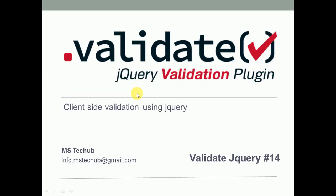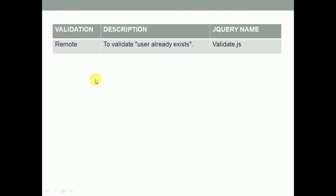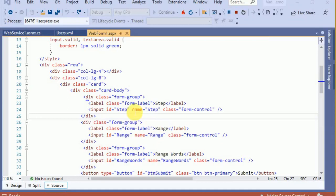Hello and welcome to MS Stack Up. This is the continuation of the validation series. In this video we are going to discuss remote validation. Remote validation is basically used to check if a user already exists. This validation is used on the registration page of the website. Let's move to Visual Studio.